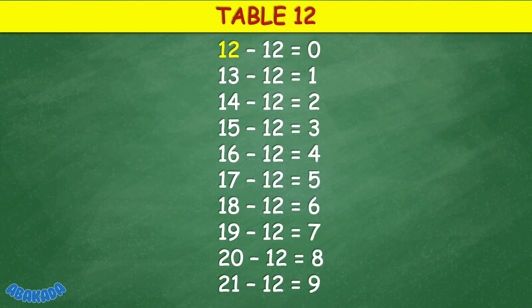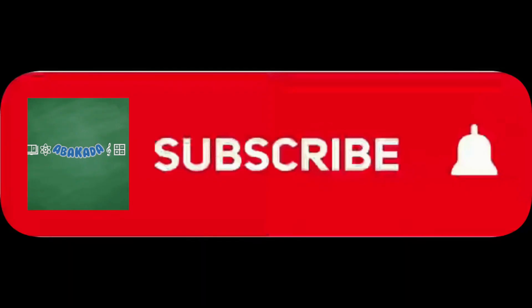Table 12: 12 minus 12 equals 0, 13 minus 12 equals 1, 14 minus 12 equals 2, 15 minus 12 equals 3, 16 minus 12 equals 4, 17 minus 12 equals 5, 18 minus 12 equals 6, 19 minus 12 equals 7, 20 minus 12 equals 8, 21 minus 12 equals 9. Thank you for watching.